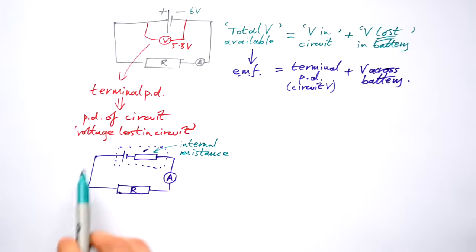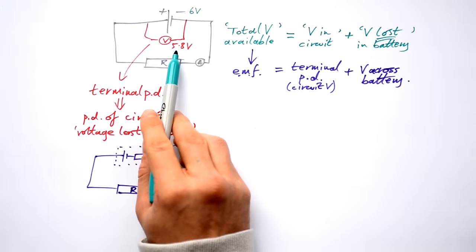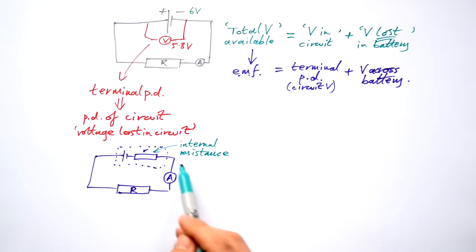So the electrons, if they come around to here, they're given six volts worth of energy, but then they travel across the battery. And by the time they've left the battery, they've already lost 0.2 volts of that six volts. So that means that there's only now 5.8 available for the rest of the circuit.